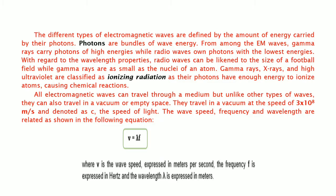The different types of electromagnetic waves are defined by the amount of energy carried by their photons. Photons are bundles of wave energy. From among the EM waves, gamma rays carry photons of high energies, while radio waves own photons with the lowest energies. With regard to the wavelength properties, radio waves can be likened to the size of a football field, while gamma rays are as small as the nuclei of an atom. Gamma rays, x-rays, and high ultraviolet are classified as ionizing radiation as their photons have enough energy to ionize atoms, causing chemical reactions. All electromagnetic waves can travel through a medium, but unlike other types of waves, they can also travel in a vacuum or empty space.